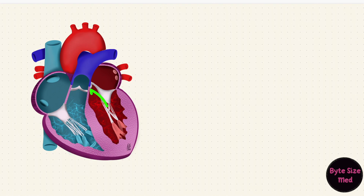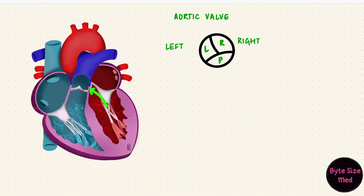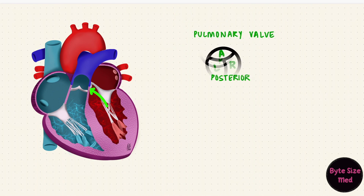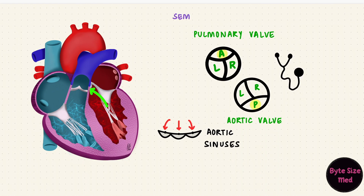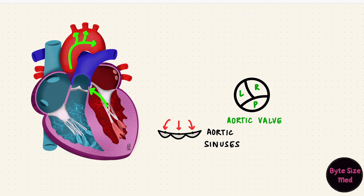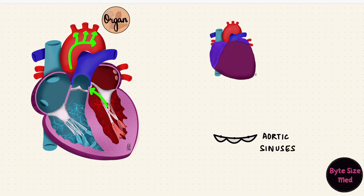Blood from the left ventricle gets pumped into the aorta through another semilunar valve called the aortic valve. Again, it has three semilunar cusps: right, left, and posterior — similar to the pulmonary valve except there it's anterior, here it's posterior. They also form pocket-like sinuses, so the recoil of blood filling the sinuses keeps the valve shut. The closure of these two semilunar valves creates a sound — the second heart sound, S2. The blood can then move forward through systemic circulation, supplying the whole body, along with the heart itself, from the right and left coronary arteries.